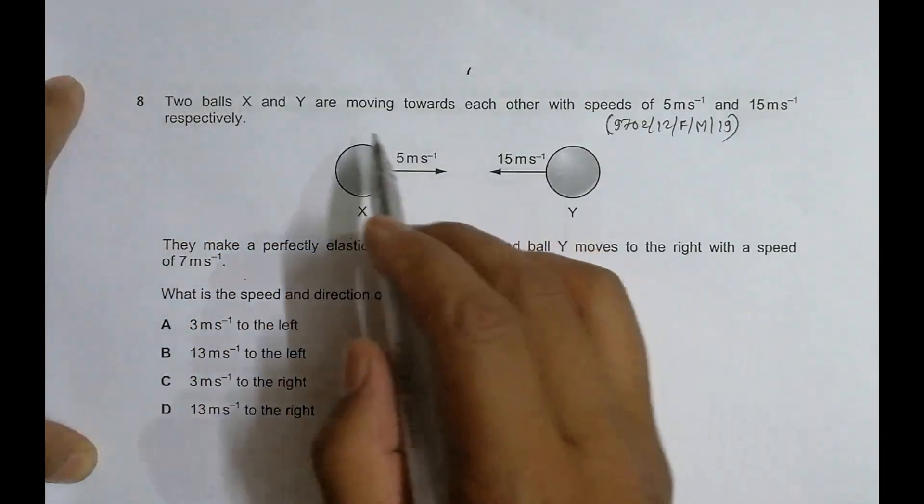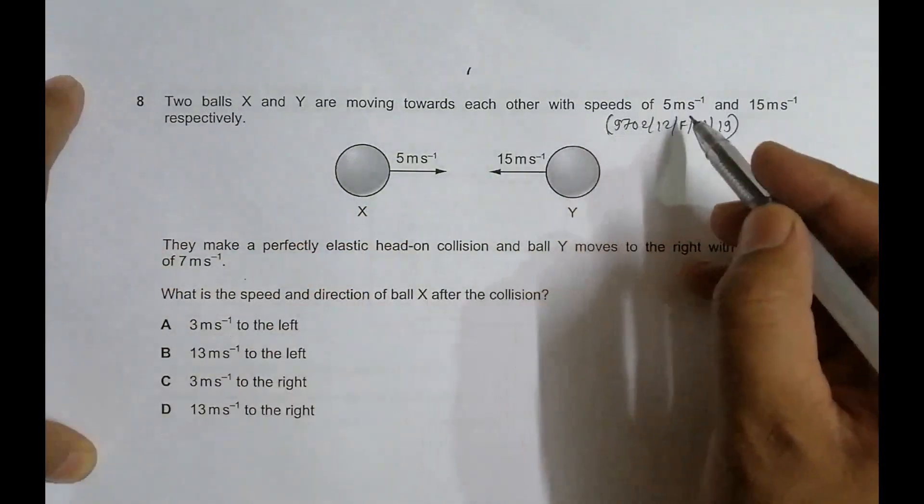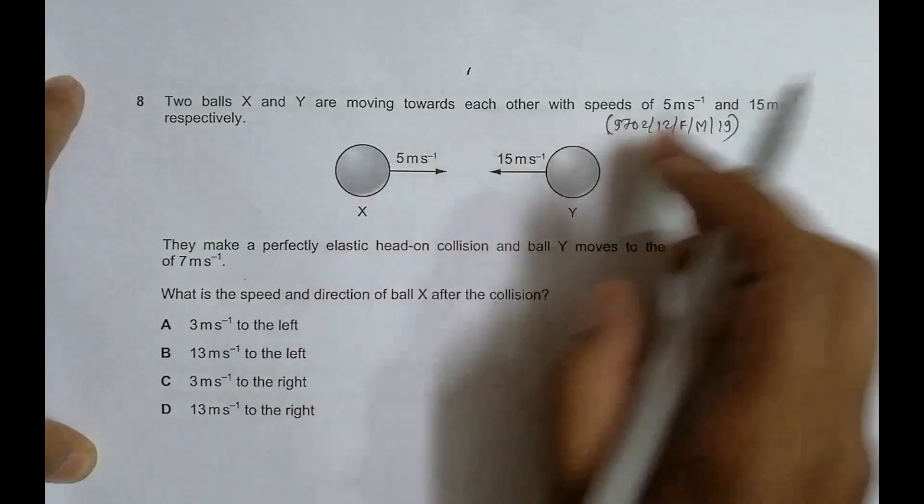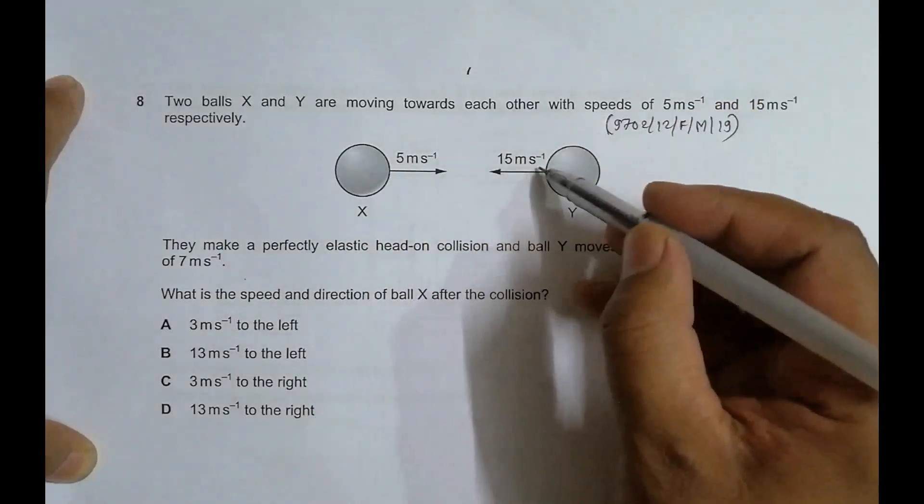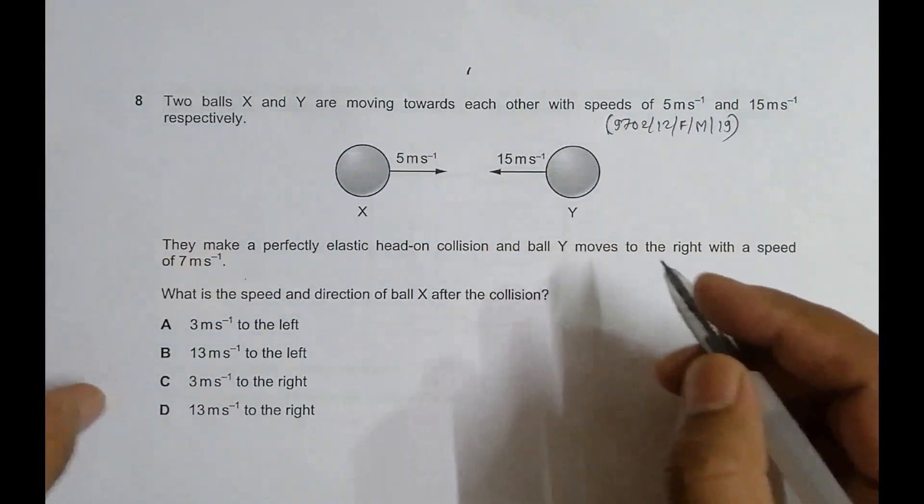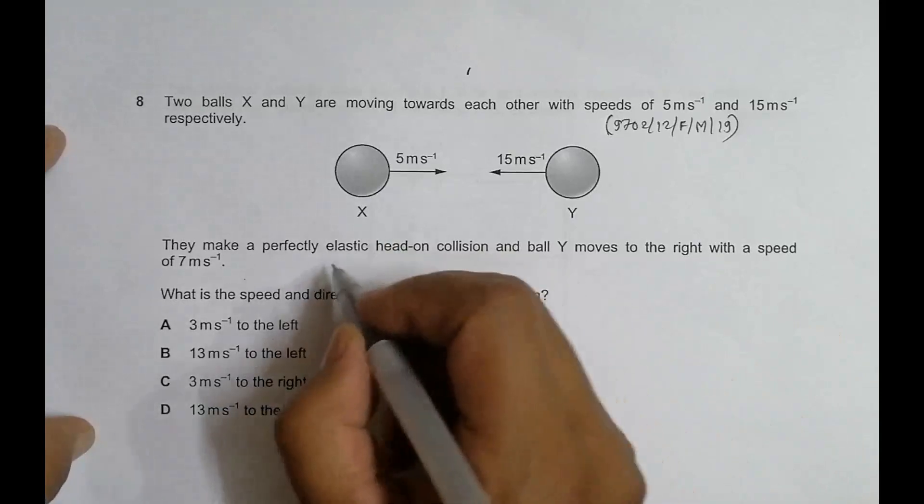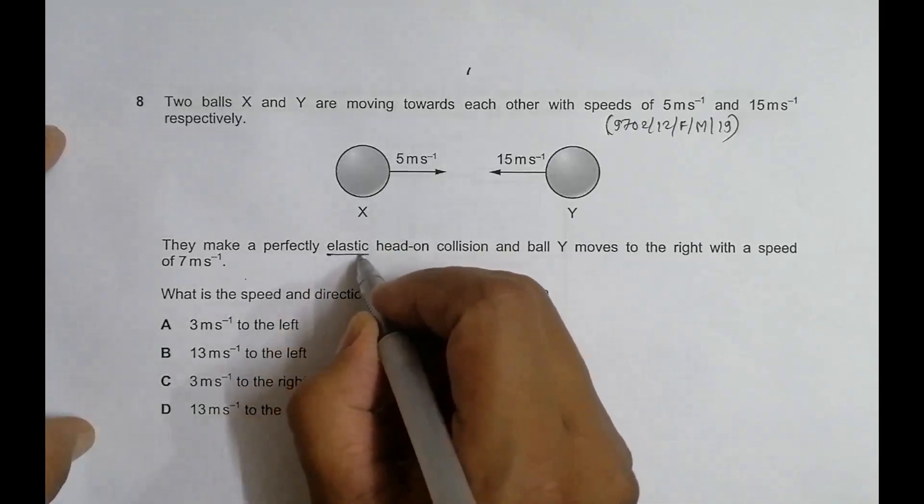Balls X and Y are moving towards each other with speeds of 5 meters per second and 15 meters per second respectively. They make a perfectly elastic head-on collision, which means they strike directly towards each other.